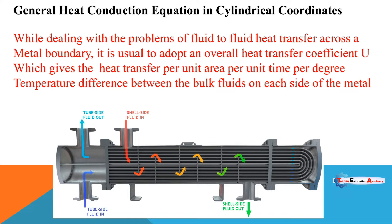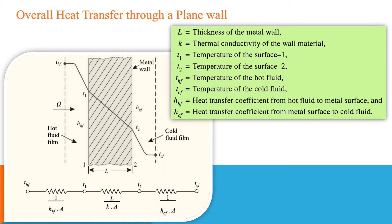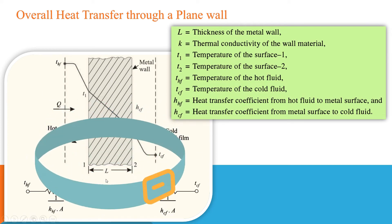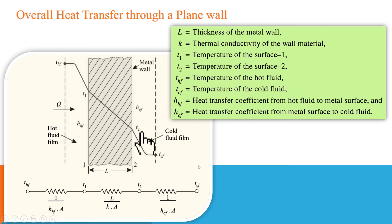Here we are considering a plane wall whose thickness is L. On the left-hand side of the wall we are considering hot fluid, and on the right-hand side we are considering cold fluid. The convection heat transfer coefficient for the hot fluid is H_HF, and for the cold fluid it is H_CF.